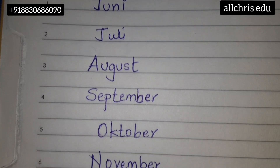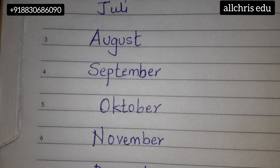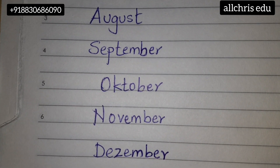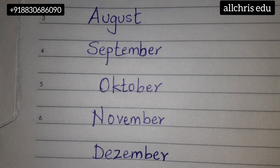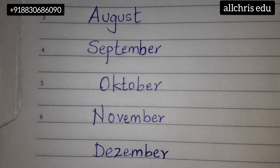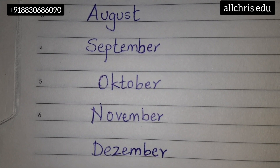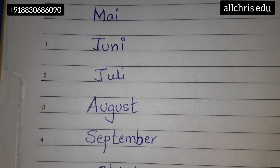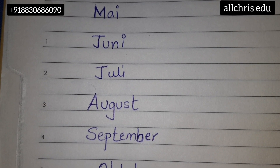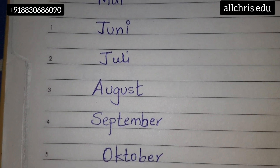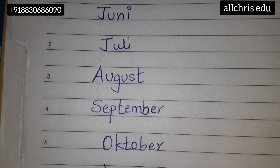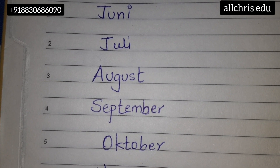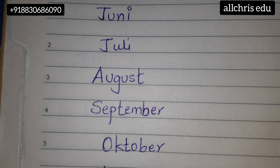Juli — J-U-L-I — Juli, with J sounding like 'yo,' so 'Yooli.' August — A-U-G-U-S-T. A is for apple and U is the 'oo' sound, so August. Please underline it and write the Z sound with pencil. September — Z-E-P-T-E-M-B-E-R — Zeptember. Oktober — O-K-T-O-B-E-R — Oktober.